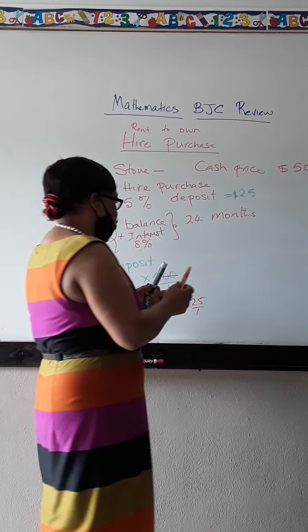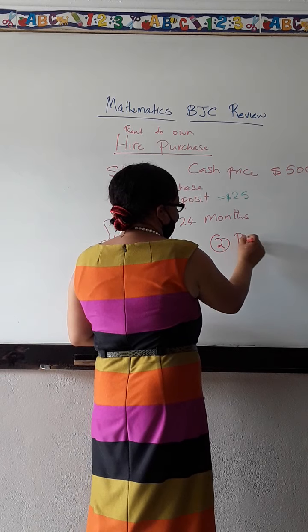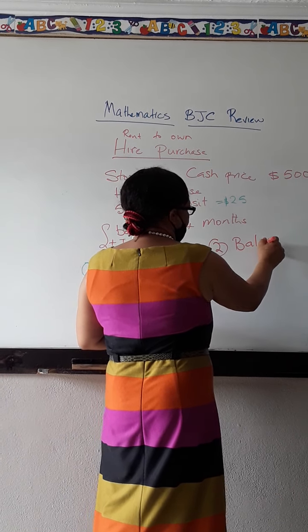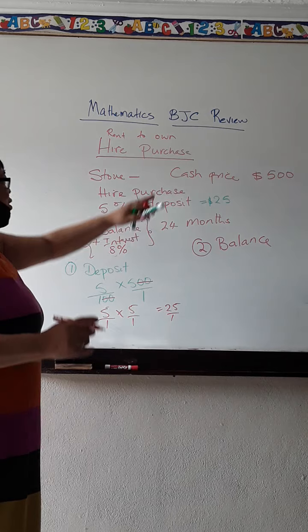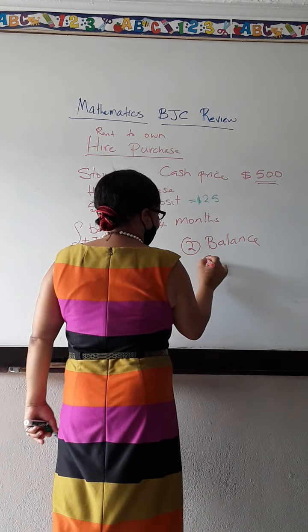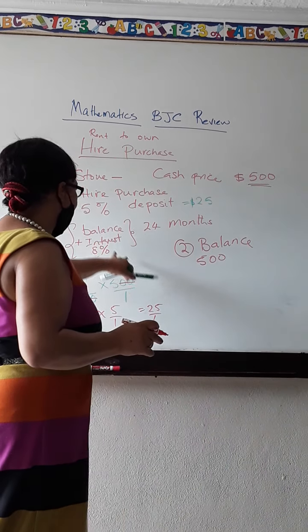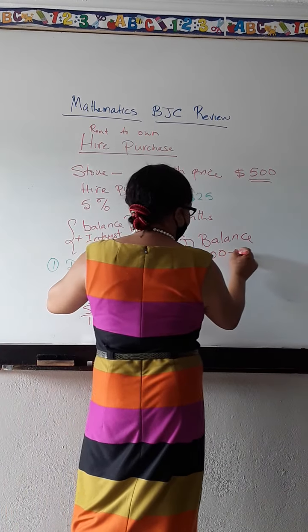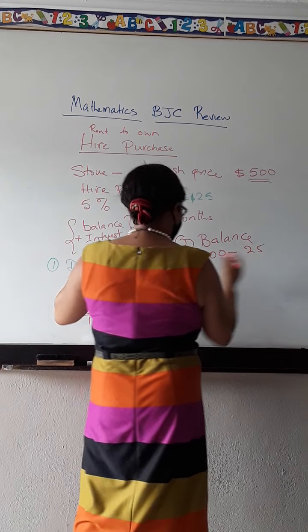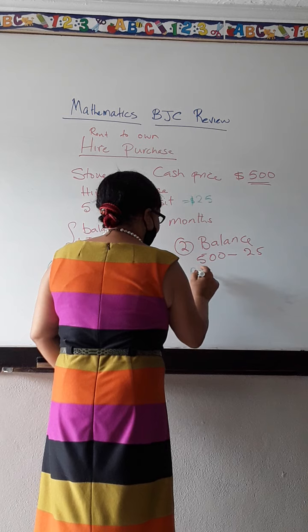What's step 2? Step 2, I now have to work out my balance. Now how do I get the balance? I am going to take the original cost, which was $500. And from that $500, I am going to subtract the deposit, which is $25. So let's see what happens here. This is the original price. Or this is the cash price.